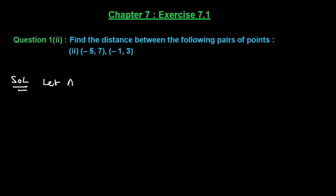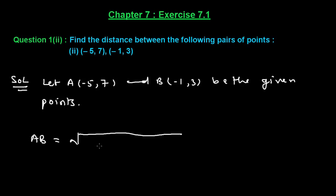Let A(-5, 7) and B(-1, 3) be the given points. Now we shall apply the distance formula: AB equals square root of (x2 minus x1) squared plus (y2 minus y1) squared.